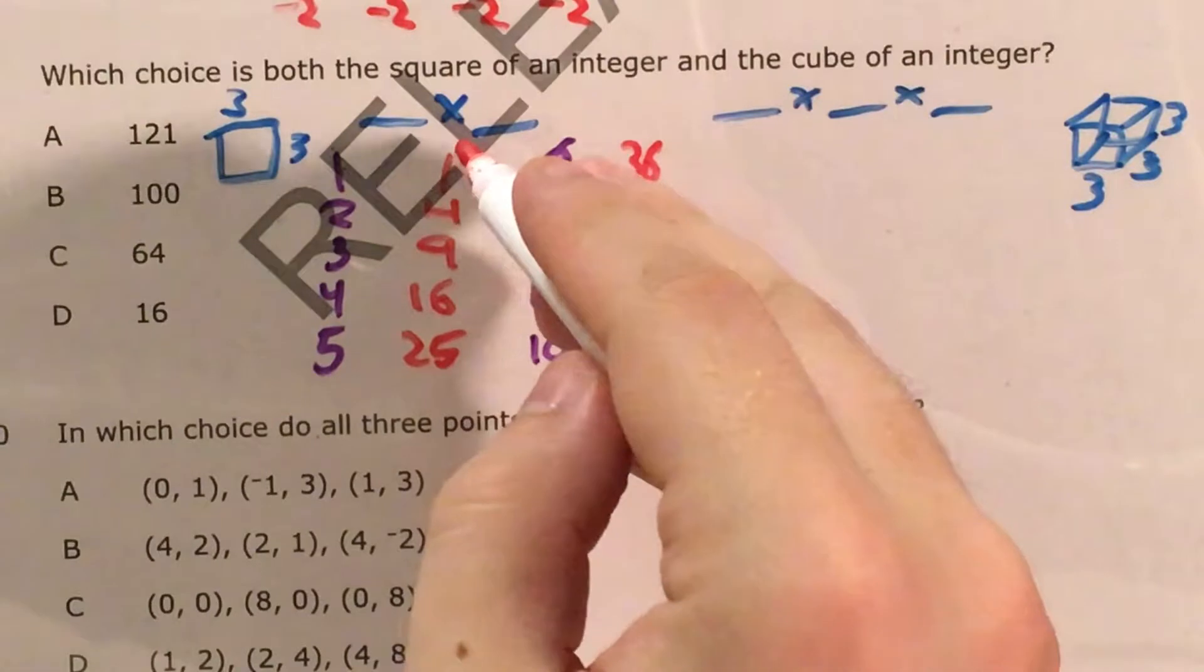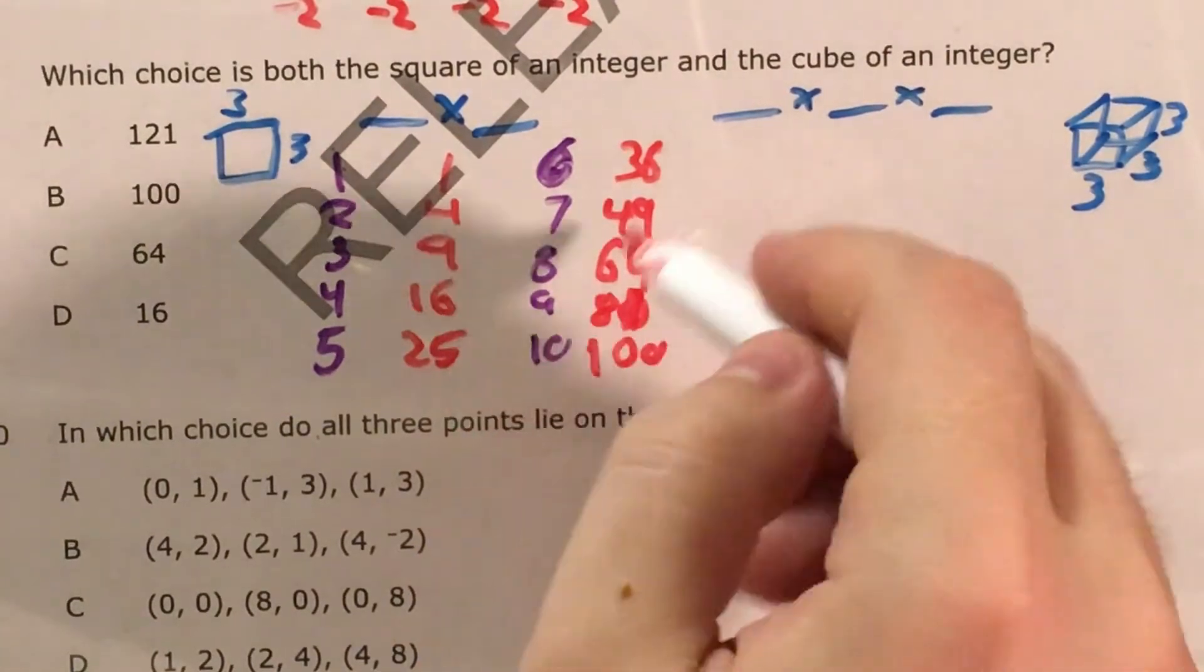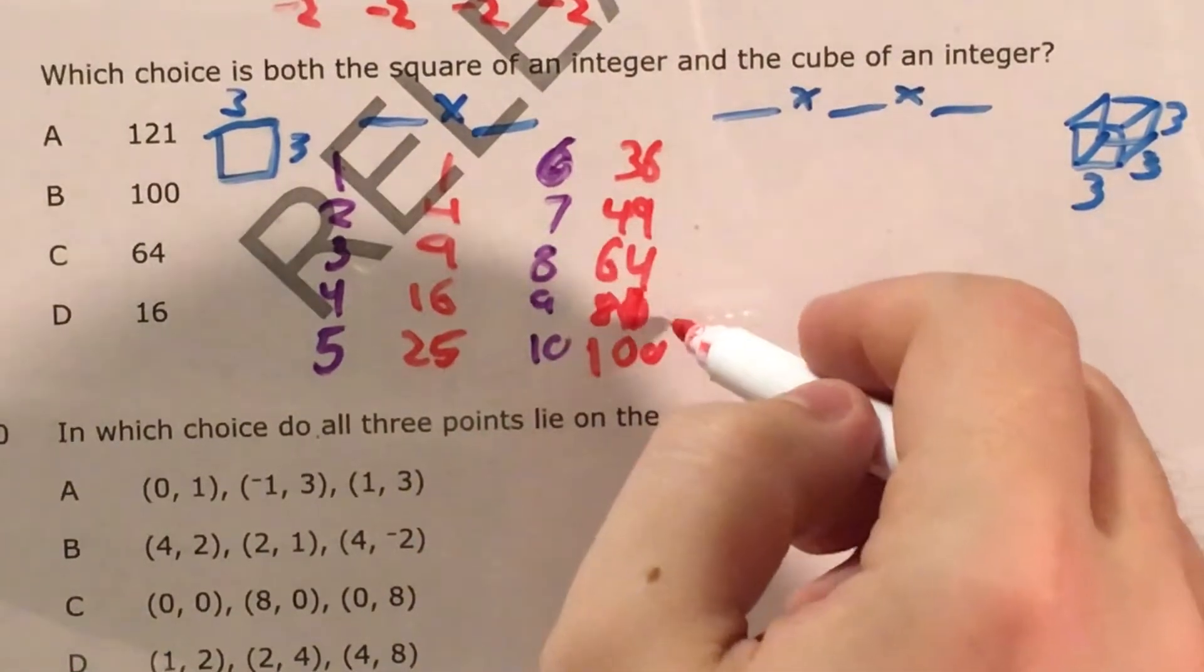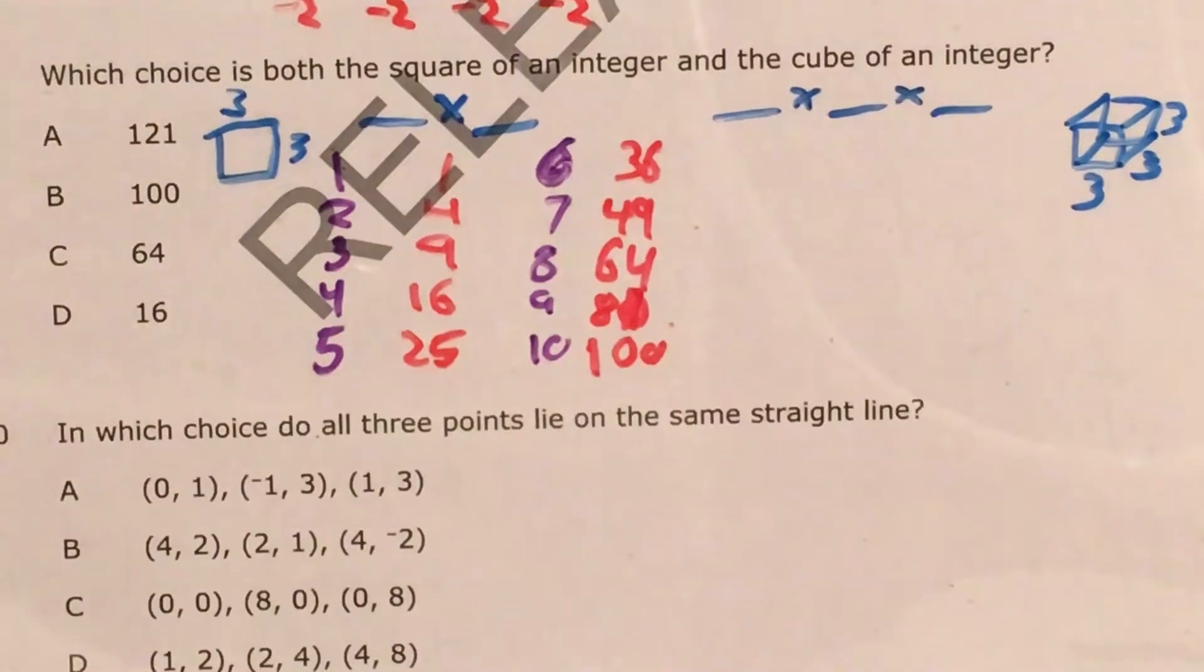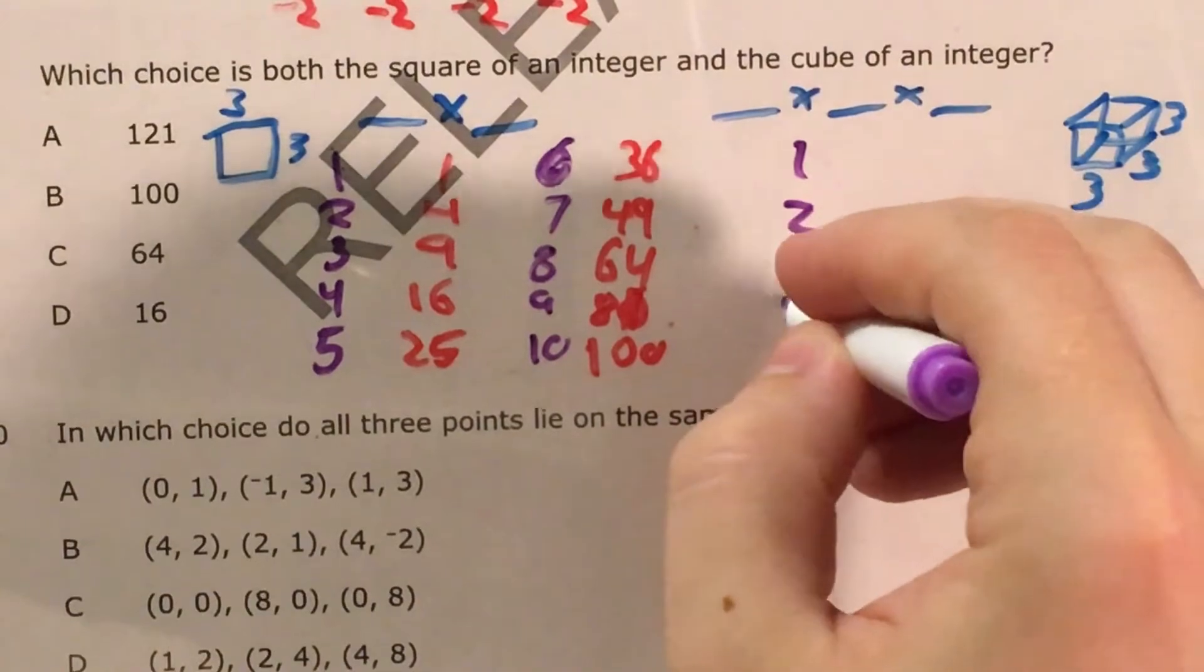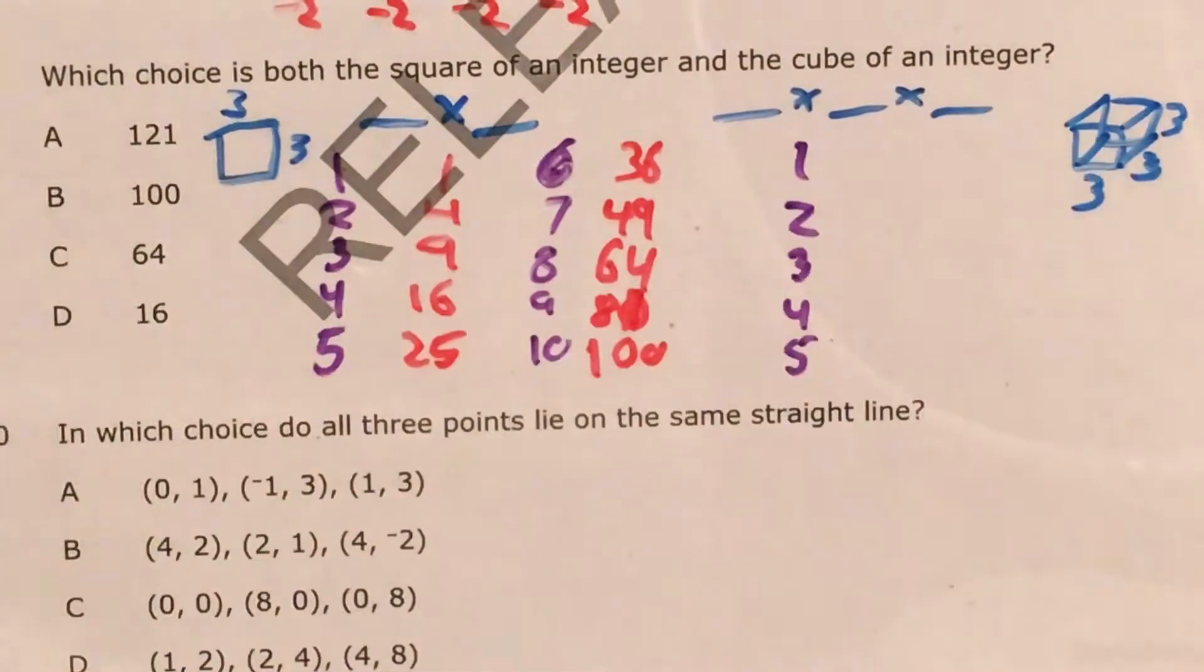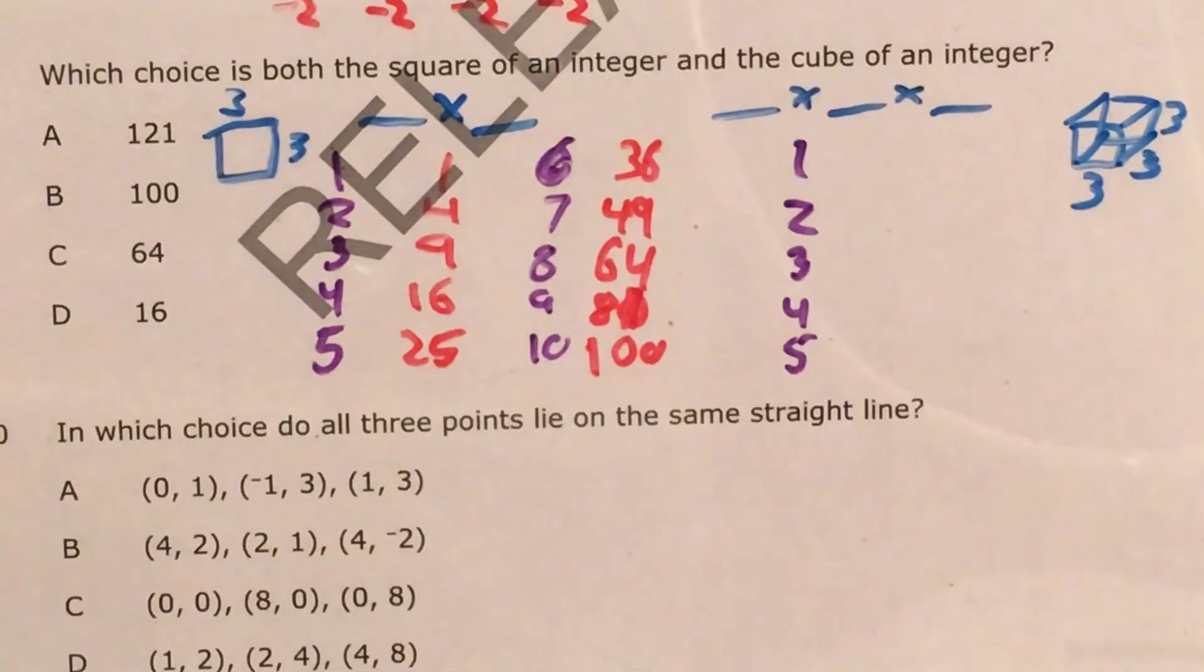So the square numbers go 1, 4, 9, 16, 25, 36, 49, 64, 81, 100. And now for cube numbers, it works the same way, except I'm going to multiply the number by itself 3 times.